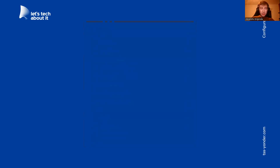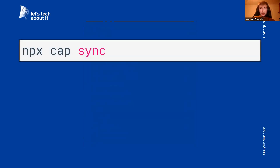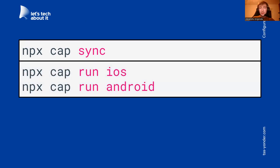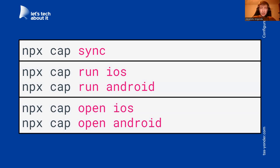A generic Capacitor workflow: after adding new functionality to your web app, run 'npx cap sync' to synchronize the JavaScript code into the native runtimes — this is needed every time you modify the JavaScript source. To test on emulators or actual devices, run 'npx cap run ios' or 'npx cap run android'. If you want to open the IDE from the command line, use 'npx cap open ios' or 'npx cap open android', which will open Xcode or Android Studio respectively.